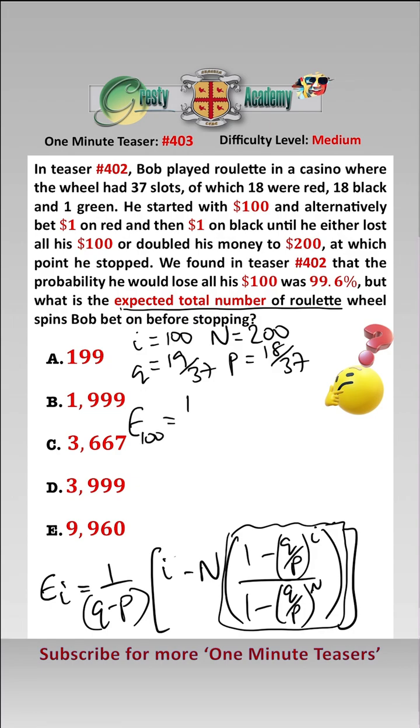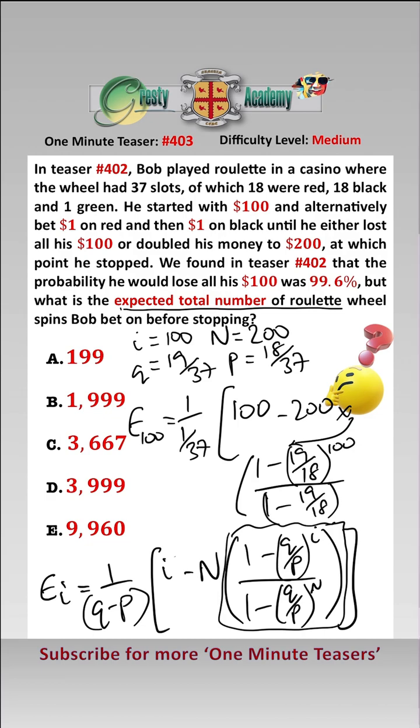...moving down here for lack of space, 1 minus (19/18)^100 over 1 minus (19/18)^200. And when we work all of that out, we get the answer 3,667, which is answer C.